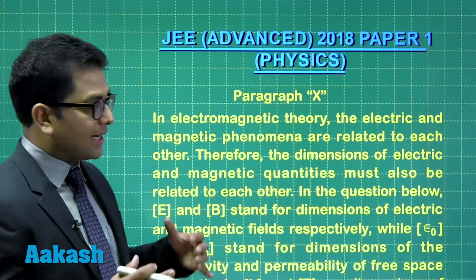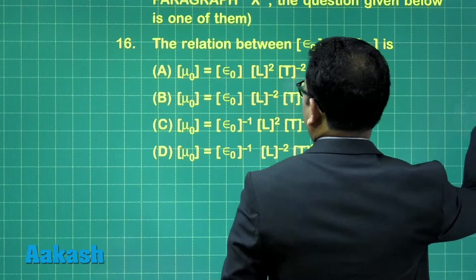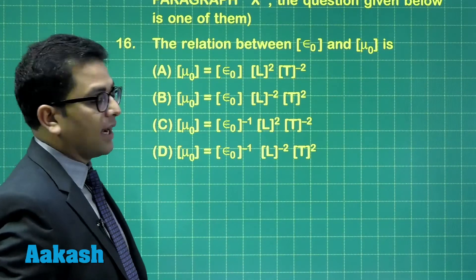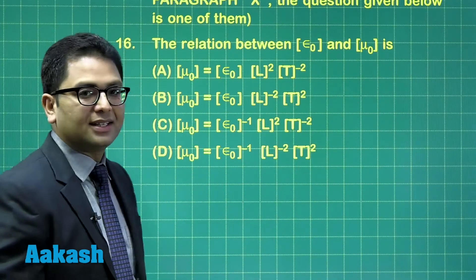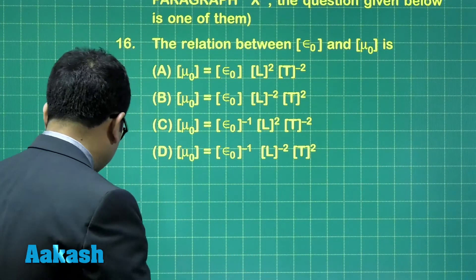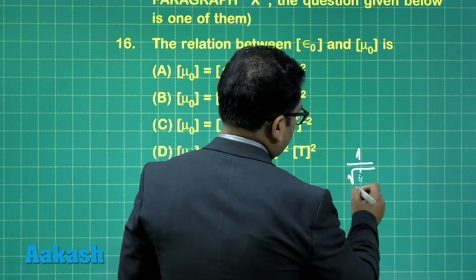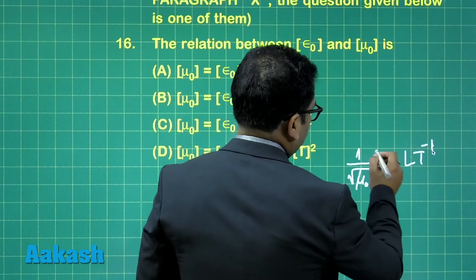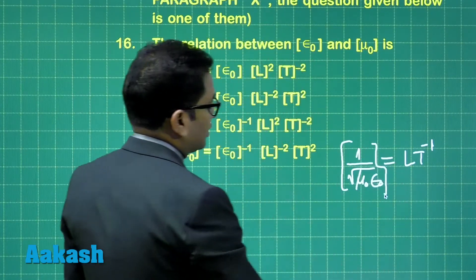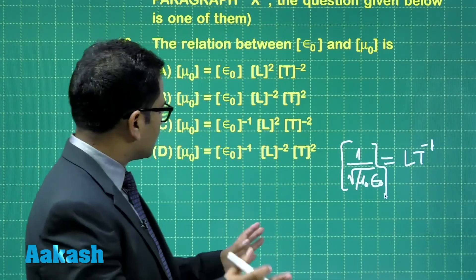Alright, let's go to question number 16 then. Question 16 is again the extension of the same thing, and here I'll directly go into that. The theory part is not required to go through - the relation between permittivity and permeability. Now very similar to that, you could understand that if I have to relate this thing, one by root mu_0 epsilon_0 will be Lt^(-1), reason being that this is the dimension of velocity, a very standard and famous term, 3 into 10 raised to the power 8. So this one, again,